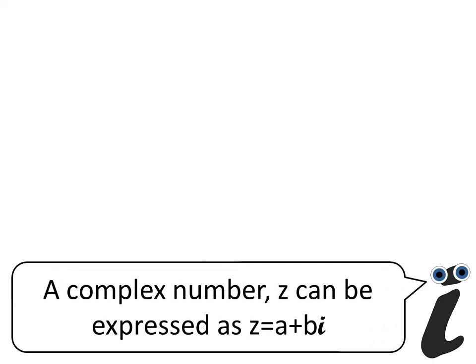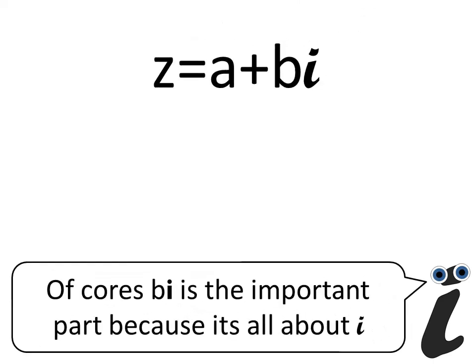A complex number z can be expressed as z equals a plus bi. Of course, bi is the important part, because it's all about i.